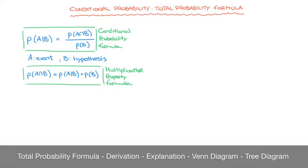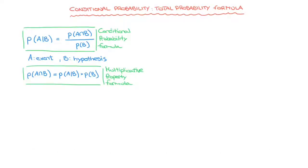In our previous tutorial, we learned about the conditional probability formula, which tells us the probability of an event A occurring given an event B has occurred. We saw that A is known as the event whose probability we're trying to find, and B is known as the hypothesis, which is the event that has already occurred or that we're assuming has occurred.